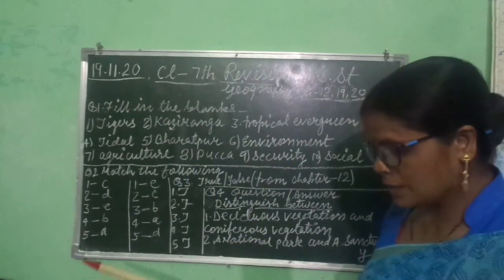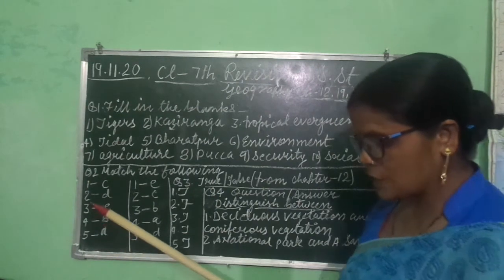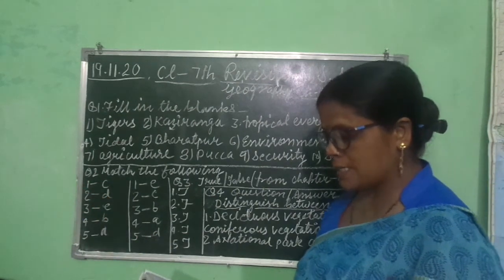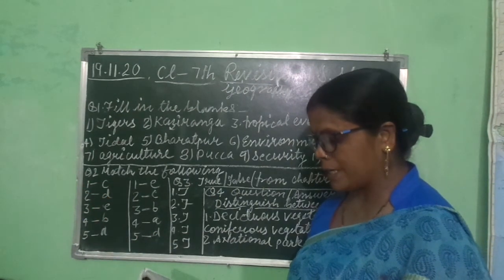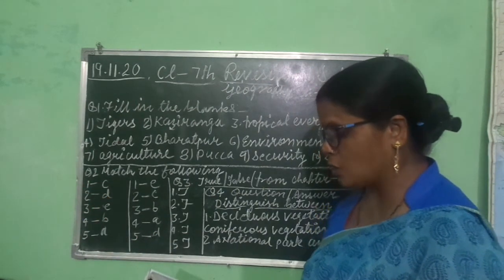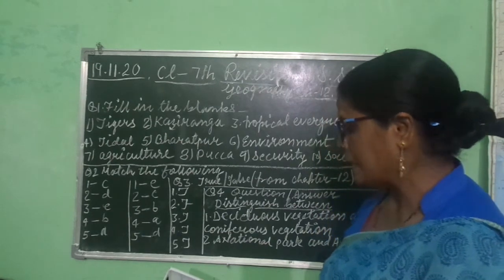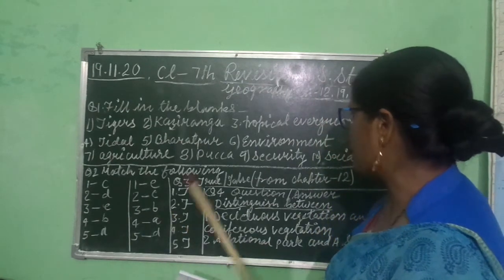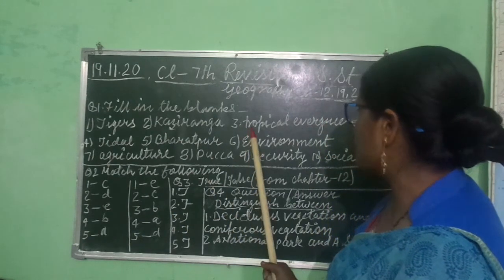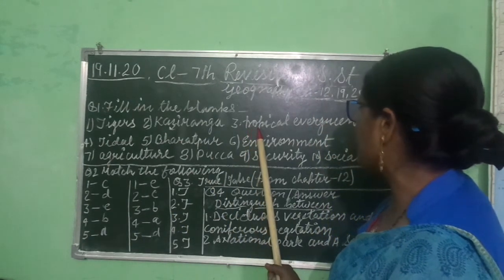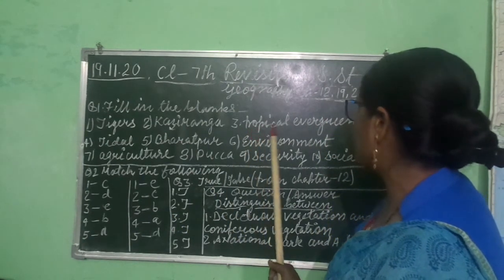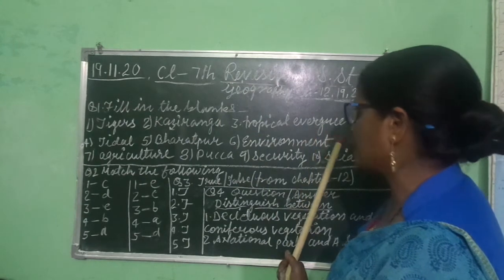Third, oak, chestnut, deodar, cedar, chir pine are trees of the tropical evergreen forest. Kis forest ke trees hain? Tropical evergreen.